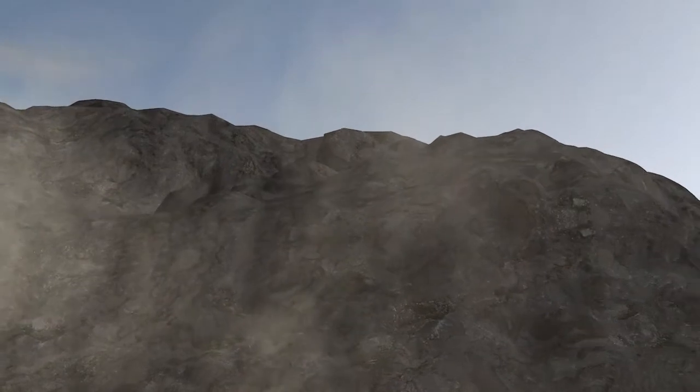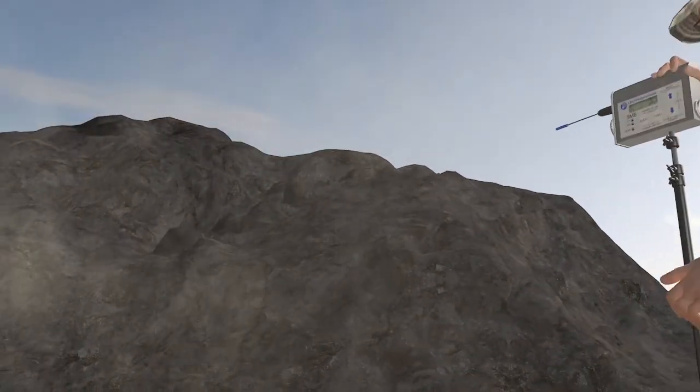A meteorite is recognizable by its black crust, which melts when it enters the atmosphere, its flat sides and blunt edges.